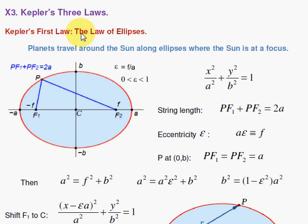Kepler's first law, the law of ellipses. A planet travels around the sun along an ellipse where the sun is at a focus. These are your two focal points. You put the sun at one and the other is empty space.